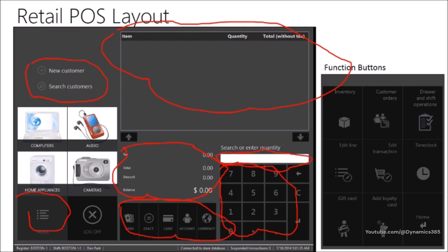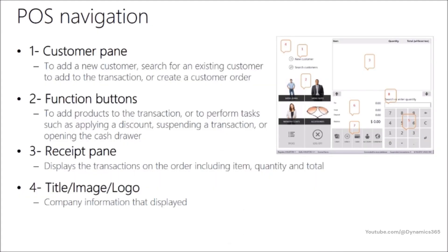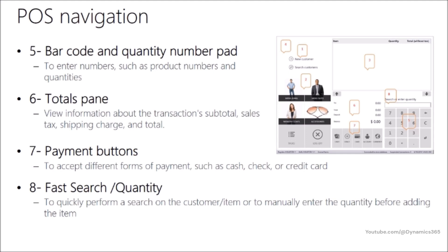The customer pane is used to add a new customer, search for an existing customer, or create a customer order. Function buttons are used to add products to the transaction, perform tasks such as applying a discount, suspending a transaction, or opening the cash drawer. The receipts pane displays transactions on the order including item quantity and total. The title image and logo section displays company information. The barcode and quantity number pad is used to enter numbers such as product numbers or quantities. The totals pane is used to view information about the transaction subtotal, sales tax, shipping charge, and total. Payment buttons are used to accept different forms of payment such as cash, check, or credit card. Fast search and quantity is used to quickly search on customer or item number, or to manually enter quantities for items.